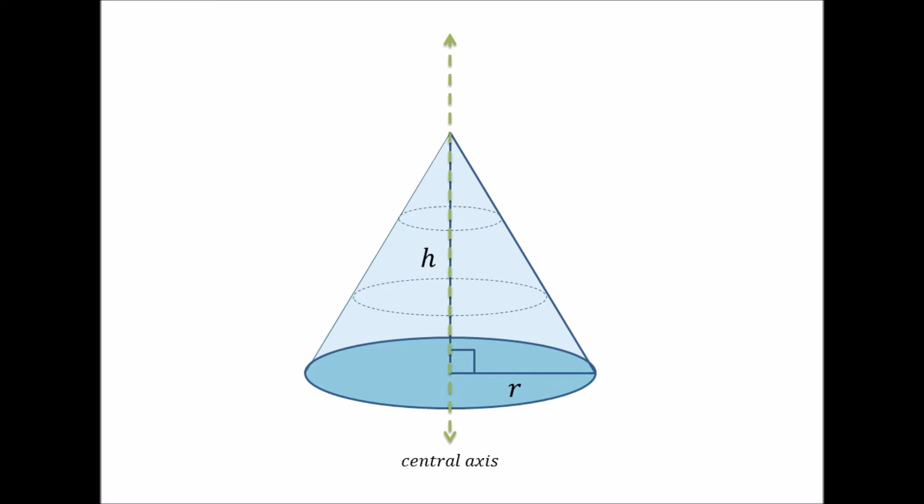And by interpreting the cone in this way, we can see that it falls under the profile of a solid of revolution, or a solid created by revolving any 2D shape around any axis.